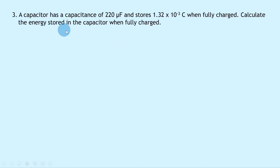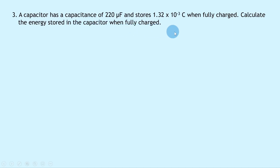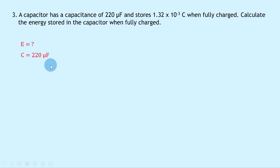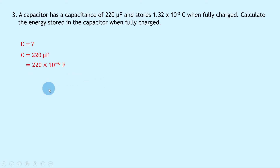Lastly, question 3 says a capacitor has a capacitance of 220 microfarads and stores 1.32 times 10 to the minus 3 coulombs when fully charged. Calculate the energy stored in the capacitor when fully charged. Writing down what we know: we're trying to find the energy E; the capacitance C is 220 microfarads, rewritten as 220 times 10 to the minus 6 farads; and the charge Q is 1.32 times 10 to the minus 3 coulombs.